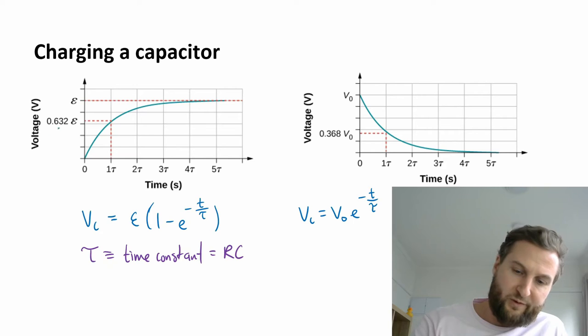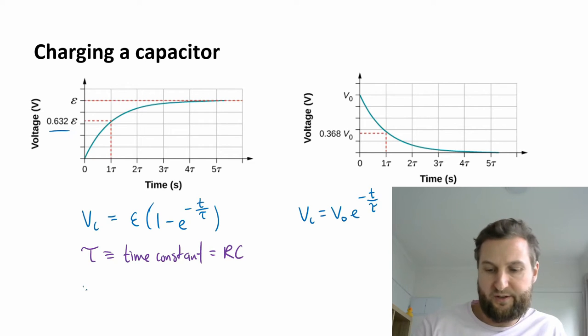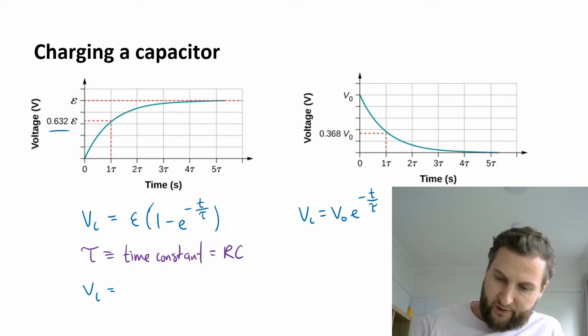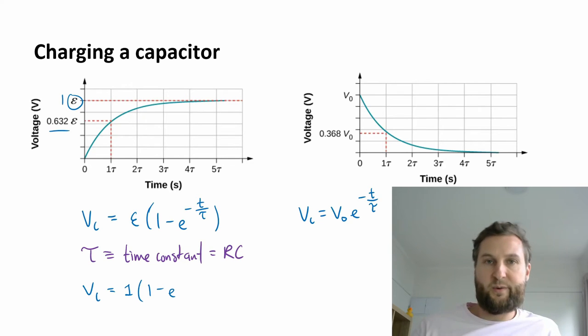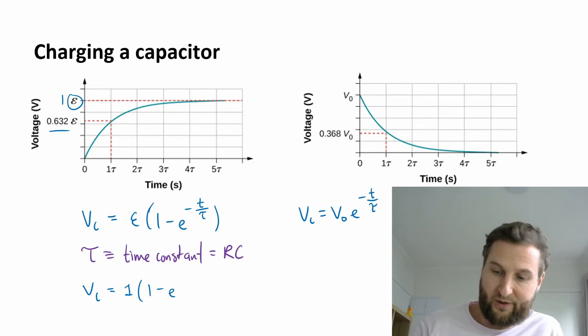Just before we move on, to solve for this point 632, what we can say here is vc, and we're going to solve. We can say that epsilon is just 1. And then I'm going to have 1 minus e, and I'm going to sub in for tau, I'm just going to sub in t. I'm going to say what happens at time t. So this is to the minus 1.